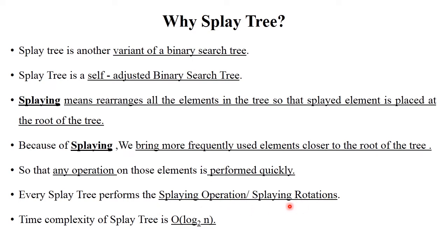So each and every operation is performed more quickly or in less time. Every splay tree performs a splaying operation and splaying rotation. The time complexity of a splay tree is O(log n base 2). Splay tree performs each and every operation more quickly or in less time as compared to other binary trees — that's why we use splay tree.